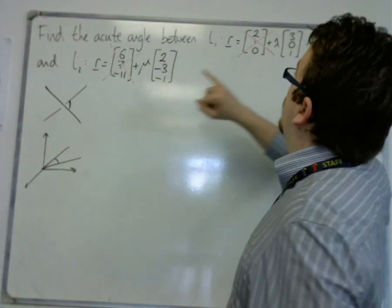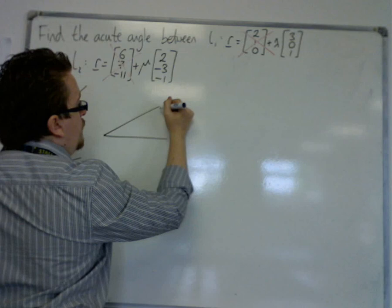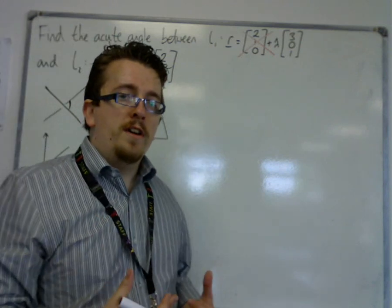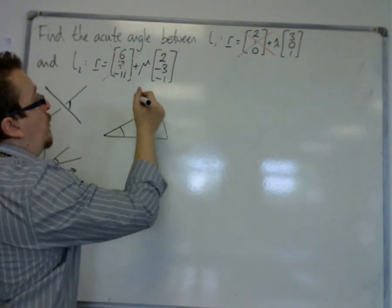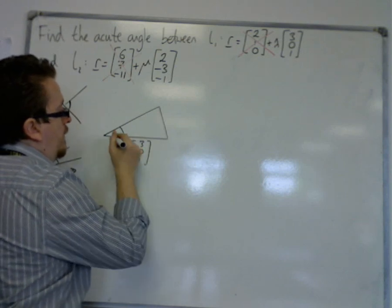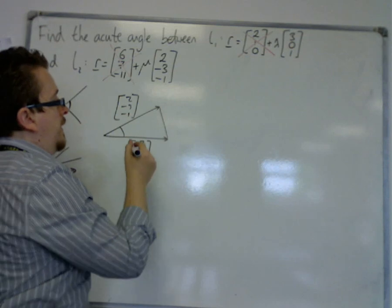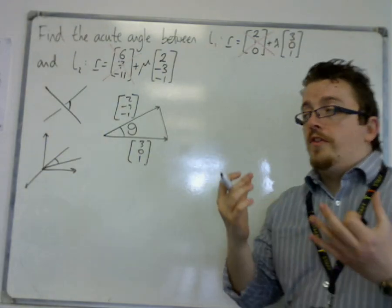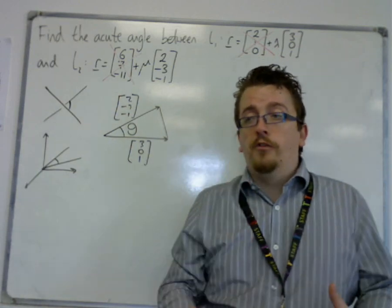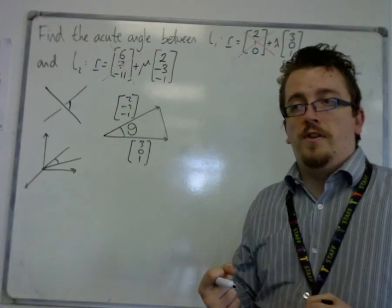So you're only going to be looking at the direction vectors. If you have two vectors and you need to find the angle between them, you can think of this as a triangle. Let's say that this is your L1 — so let's call that the vector (3, 0, 1) — and this vector was (2, −3, −1). And you want that angle theta. Then you can think back to triangles — if I knew that length as well, I could do a cosine rule. And the cosine rule is kind of like the birthplace for what we call the scalar product, or the dot product.